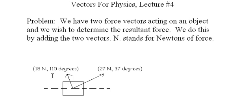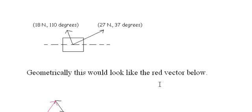I have another vector that's 18 newtons of force, a shorter vector acting 110 degrees counterclockwise from this horizontal line. These two vectors are operating on this object and there's going to be a resultant vector. In other words, what's the sum of these forces?